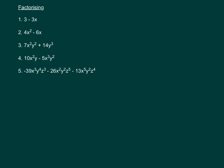Factorising example 1: we have 3 - 3x. We find the highest common factor of both terms, which is 3. Dividing both terms by 3 leaves us with 1 and minus x inside the bracket, giving 3(1 - x).